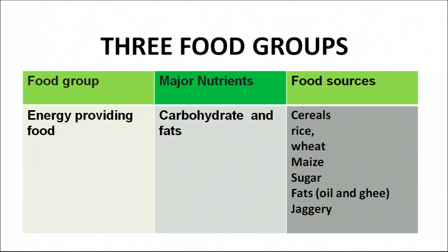Let us see the three food groups in this table. The first group covers energy-providing foods, whose major nutrients are carbohydrates and fats. The food sources from which we can get energy-providing foods are cereals, rice, wheat, maize, sugar, fats, oils, ghee, and jaggery. All of these are the energy-providing foods in our diet.